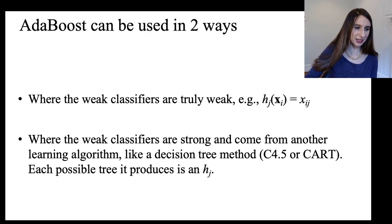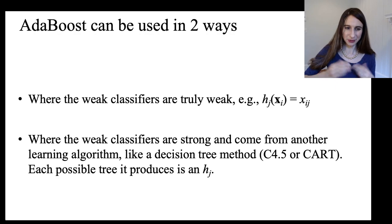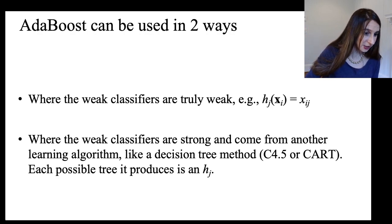And then the weak classifiers are the decision trees. And so in that case, you're using the weak learning algorithm to search through the set of weak classifiers and pick one that's right for the task. And boosted decision trees are actually the best out-of-the-box machine learning method that I know of. If you put any data set into it, you can get something out that's pretty darn good.